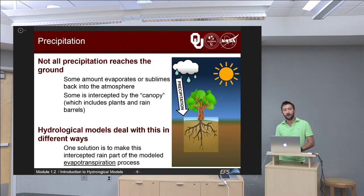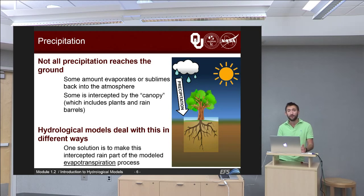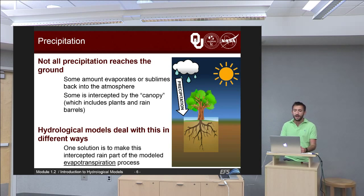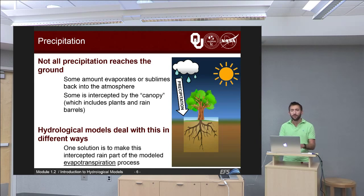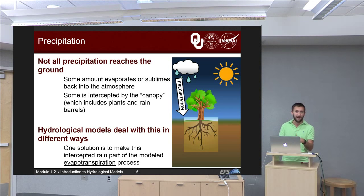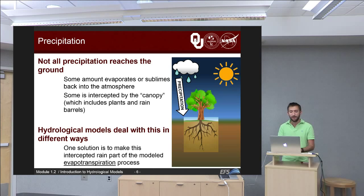Not all precipitation reaches the ground. Some evaporates or sublimes back into the atmosphere before it ever reaches the ground — especially if the atmosphere is very dry. Some is intercepted by what we call the canopy, which consists of things like plants, trees, and rain barrels. If people are collecting rainwater, that water collects in the barrel and doesn't make it to the ground. In the model, we treat all of those different things as the canopy, and hydrological models deal with this by making that intercepted rainfall part of the evapotranspiration process.